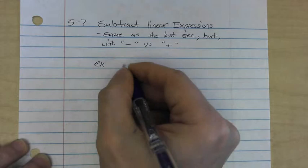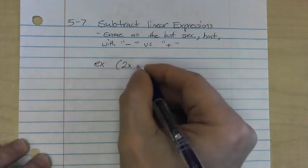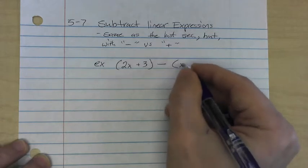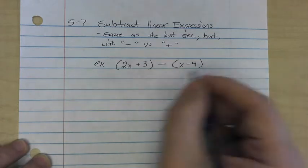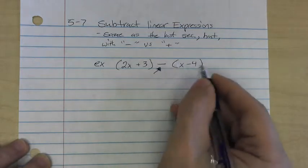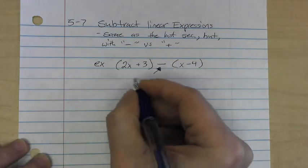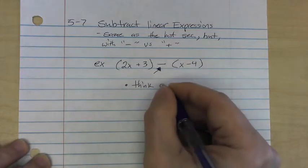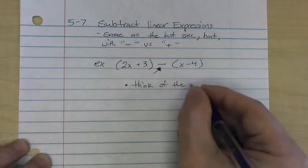So we'll use the same example we used last section, 2x plus 3, this time we're going to have a minus, x minus 4. Now, just like I said last time, right here, if there's no number preceding this group of terms here, then what I want you to do is I want you to think of the minus sign